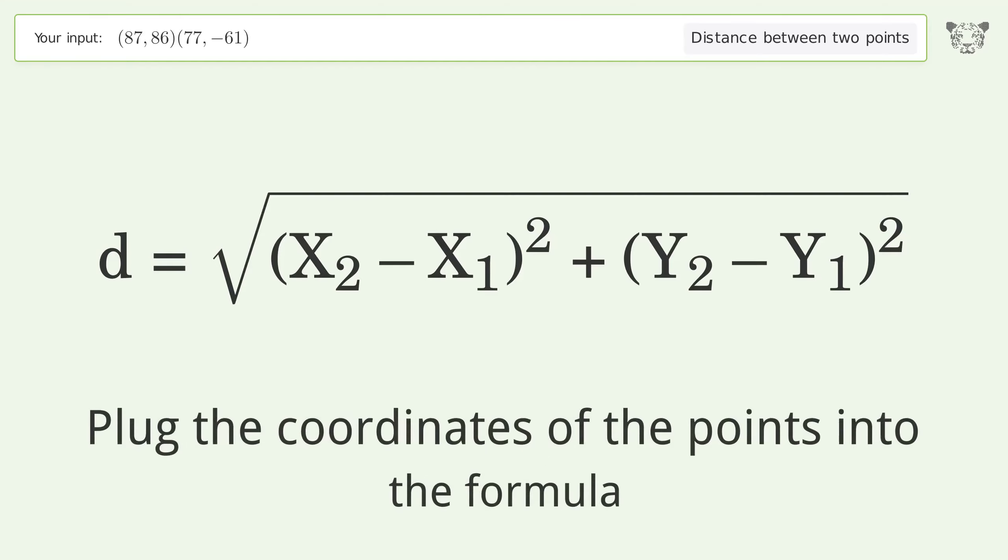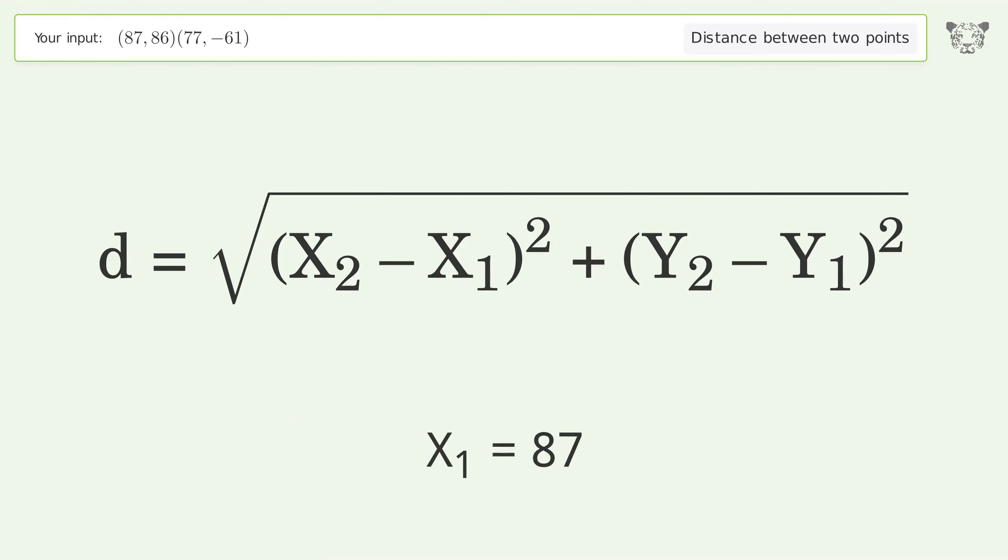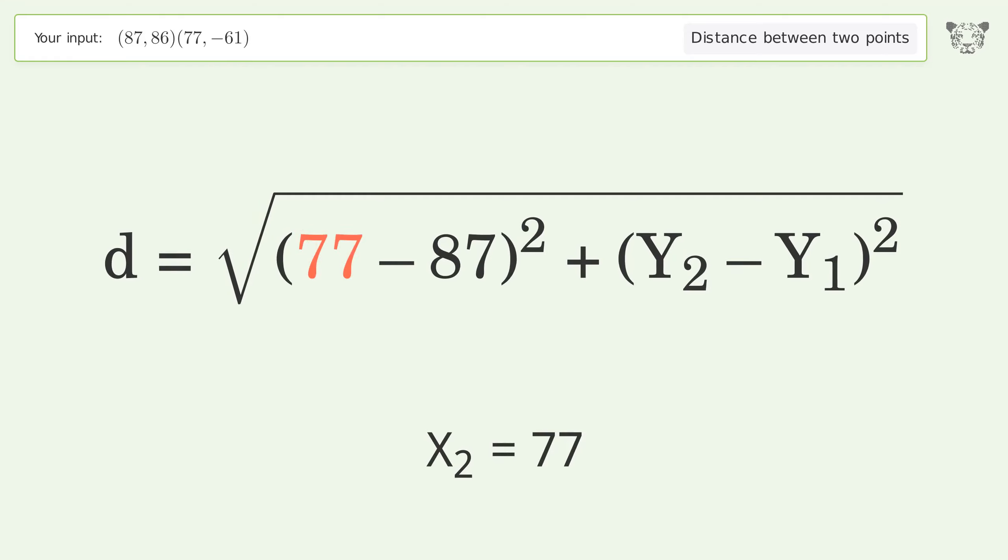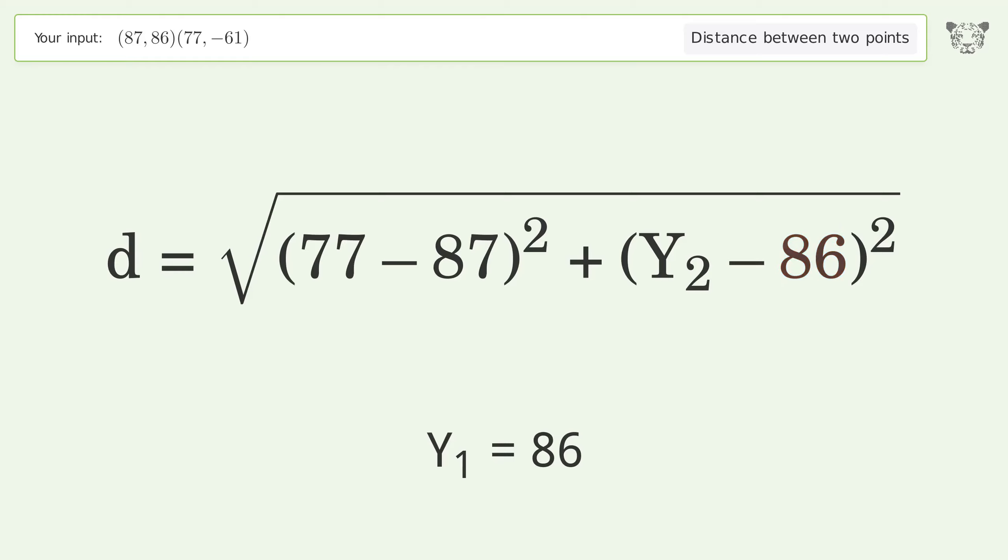Plug the coordinates of the points into the formula: x1 = 87, x2 = 77, y1 = 86, y2 = -61.